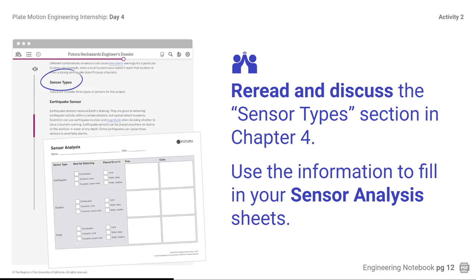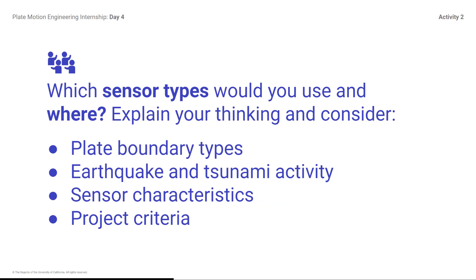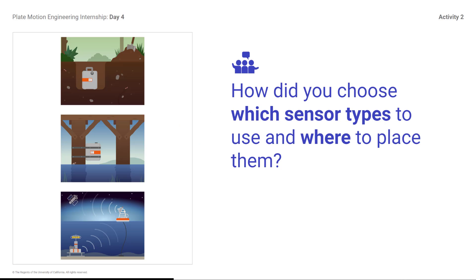Revisit the dossier and record the details on your sensor analysis sheets. Which sensor types would you use and where? Explain your thinking and consider plate boundary types, earthquake and tsunami activity, sensor characteristics, and project criteria. Refer to your annotated maps of the Indian Ocean region. Earthquake sensors can be used anywhere, send their data very quickly, and rarely break — but they can't send data about a tsunami and might give false alarms. Shallow sensors are very cheap with medium reliability, but there's a data delay and they break easily. Deep sensors are very reliable and send data quickly, but they break a lot, are very expensive, and are very likely to produce false alarms. Pros and cons are also sometimes called trade-offs.